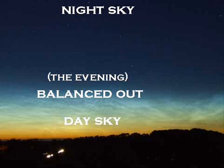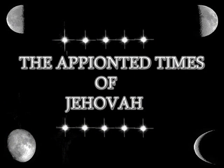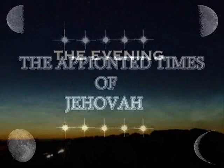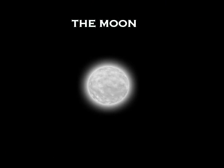Now I'm going to show you how to follow the nights and days according to Jehovah's Appointed Times, and how the nights and days are counted using the moon and sun. The evening is the time period that separates night from day. Being that night is the first half of 24 hours, the moon is the timekeeper for counting the nights and days.